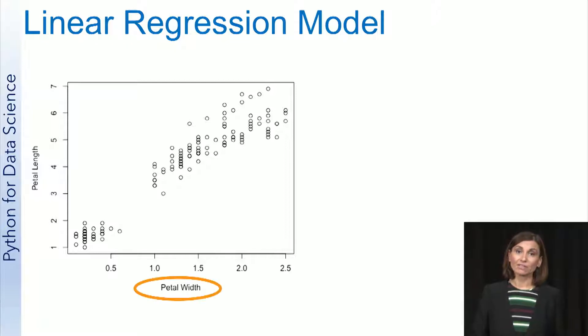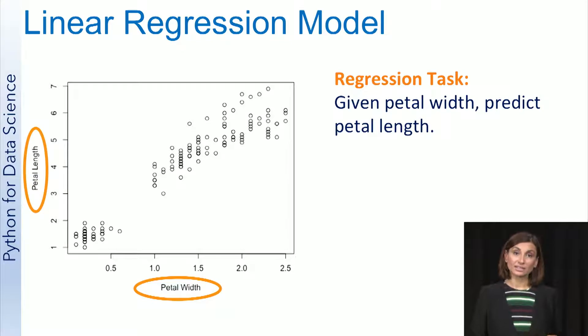Here we have a plot with petal width measurements in centimeters on the x-axis, and petal length measurements on the y-axis. Let's say that we want to predict petal length based on petal width. Then, the regression task is this: given a measurement for petal width, predict the petal length.